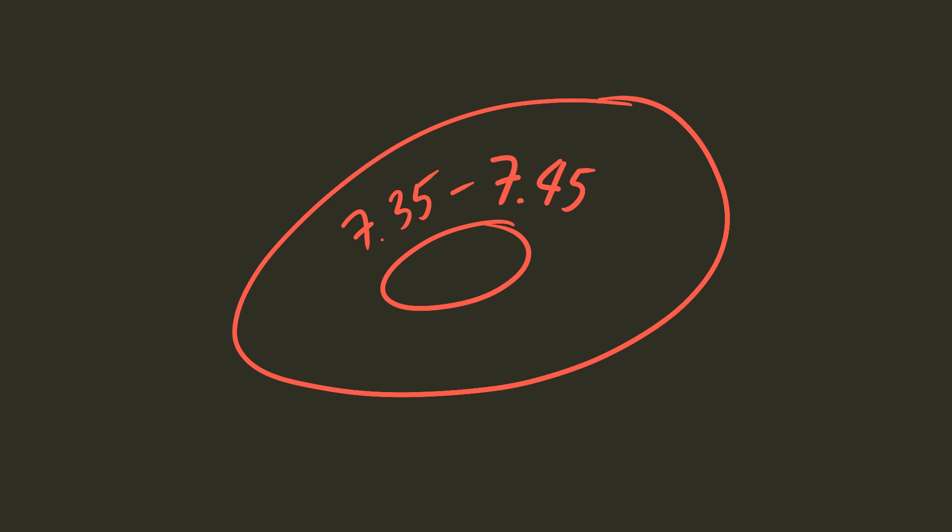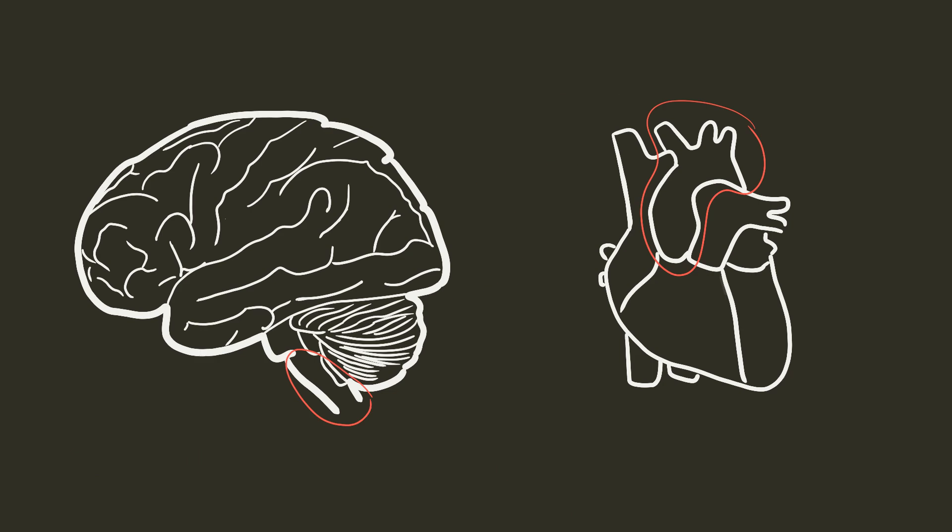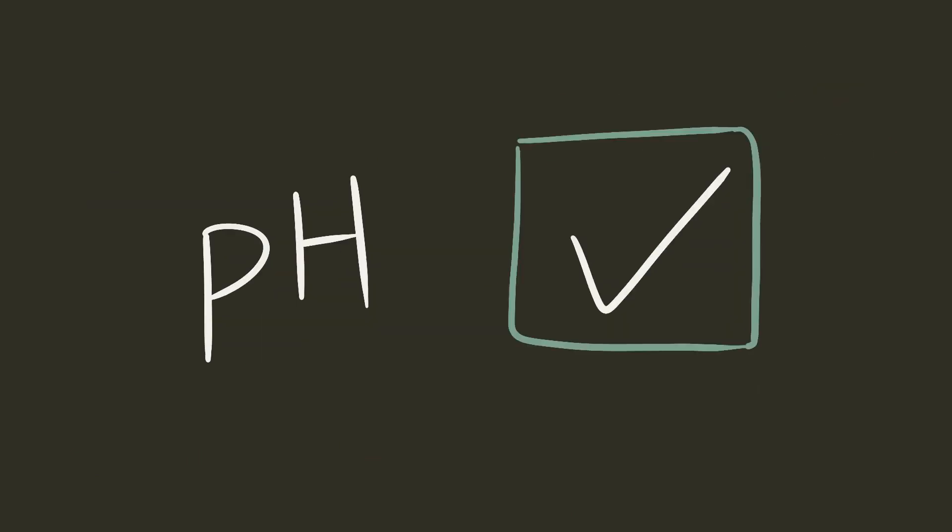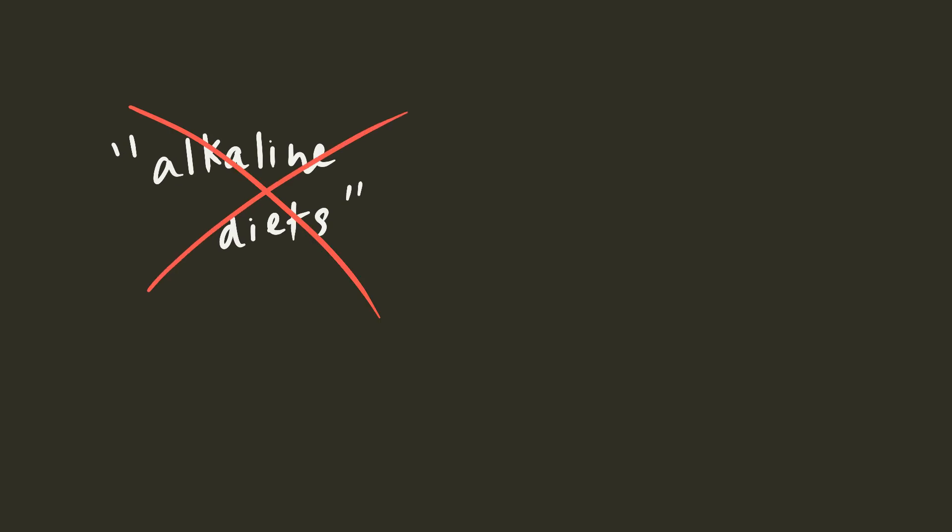Our body is pretty picky. It wants to maintain a blood pH range of between 7.35 to 7.45. We have special receptors in our brainstem and major blood vessels that keep our blood pH in check. This is why those alkaline diets are, to put it nicely, pure garbage. That's just not how blood chemistry works. Our bodies already have mechanisms in place to keep our blood pH within a very specific range, no matter what we eat.